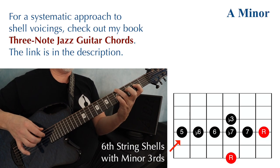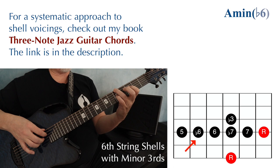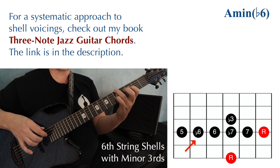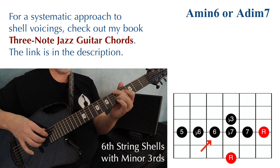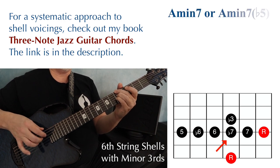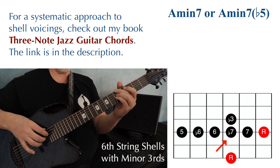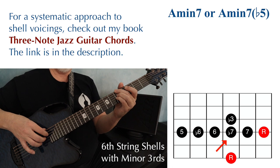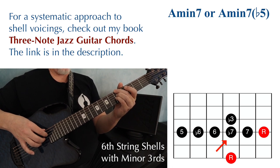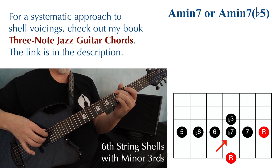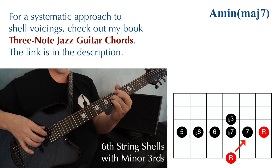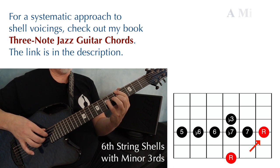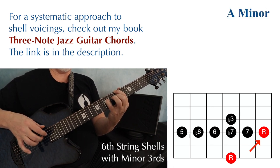Here's the whole series: A minor, A minor flat six, A minor six — which you could also call A diminished seven — A minor seven — which you could also call A minor seven flat five or A half diminished — A minor with a major seven, and then A minor again.